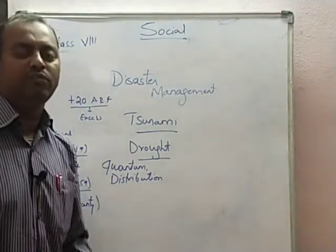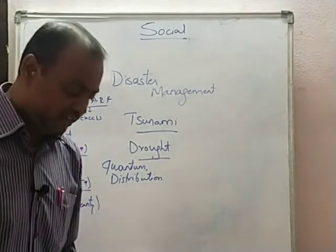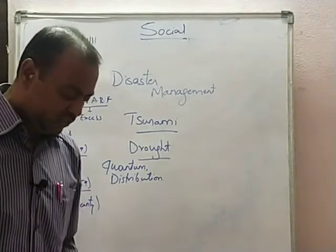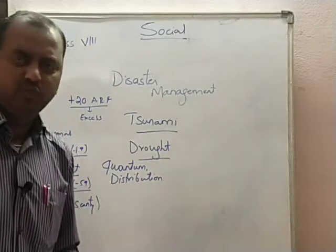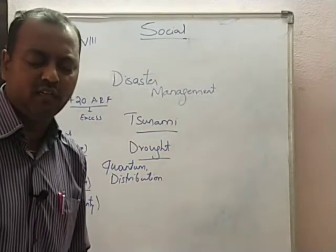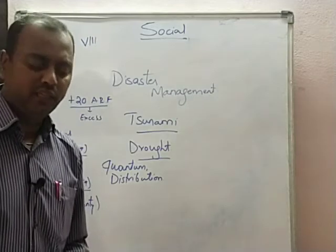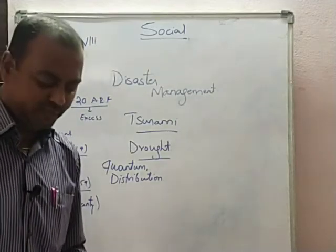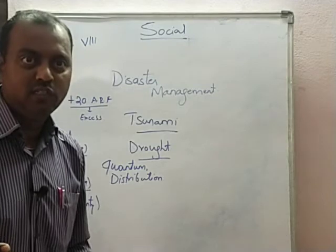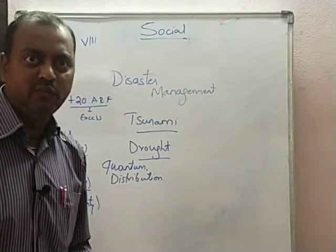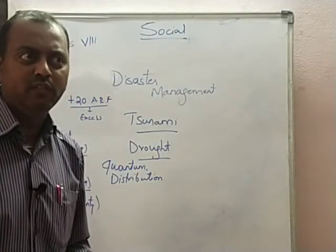This is what we saw yesterday — excess, normal, deficient, and scanty. Today we shall learn about certain regions that, due to their geographical locations, are more likely to receive less rainfall. These are called drought-prone areas. The place where drought continuously occurs is called a drought-prone area.